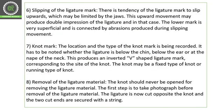The sixth factor is slipping of the ligature mark. There is a tendency for the ligature mark to slip upward, which may be limited by the jaws. The upward movement may produce a double impression of the ligature mark. The lower mark is very superficial and is connected by an abrasion produced during the slipping movement. This is known as slippage of the ligature mark.